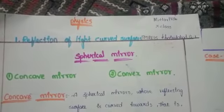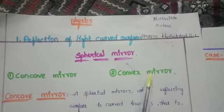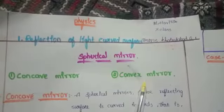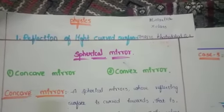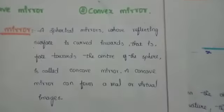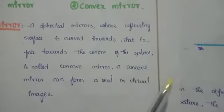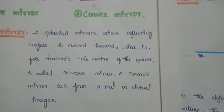In that chapter, spherical mirrors are of two types. One is concave mirror, another is convex mirror. In a concave mirror, a spherical mirror whose reflecting surface is curved inwards — that is, faced towards the center of the sphere — is called a concave mirror.